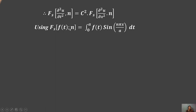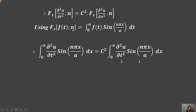The finite Fourier sine transform formula is: Fs{f}(n) = ∫₀ᵃ f(x)·sin(nπx/a) dx. Applying this, the left side becomes ∫₀ᵃ (∂²u/∂t²)·sin(nπx/a) dx = c²·∫₀ᵃ (∂²u/∂x²)·sin(nπx/a) dx.